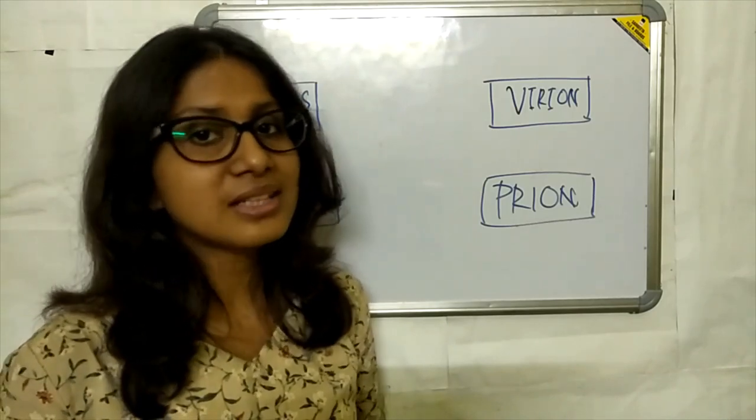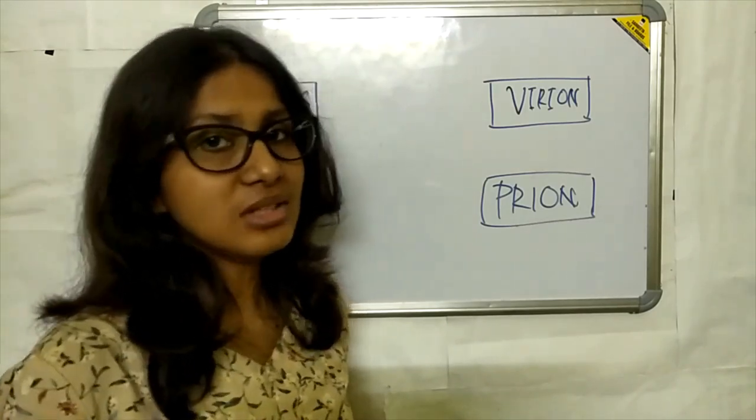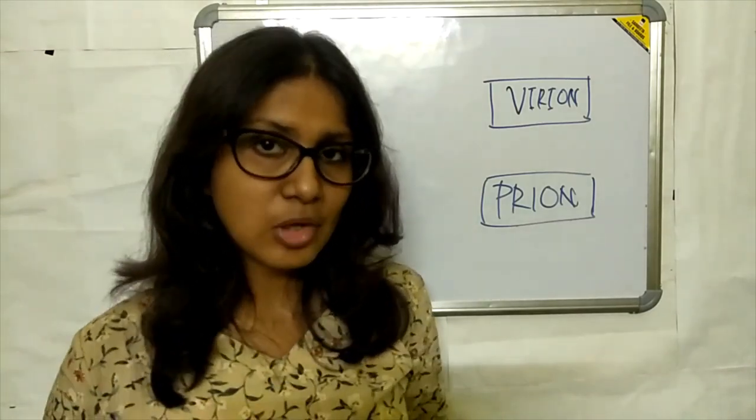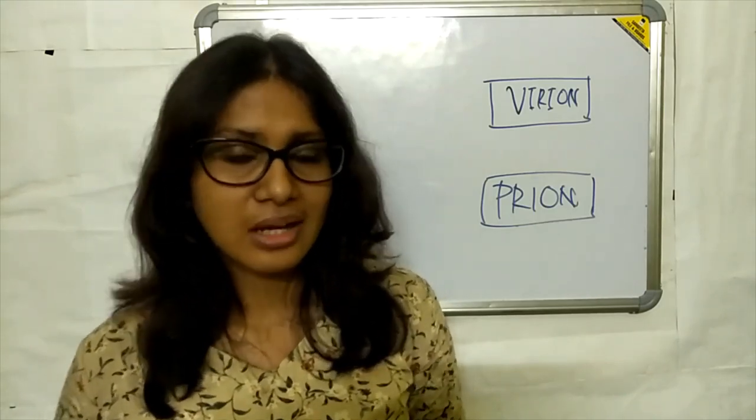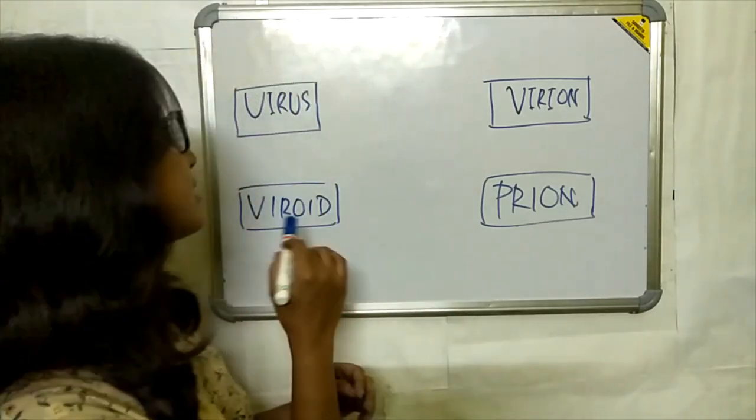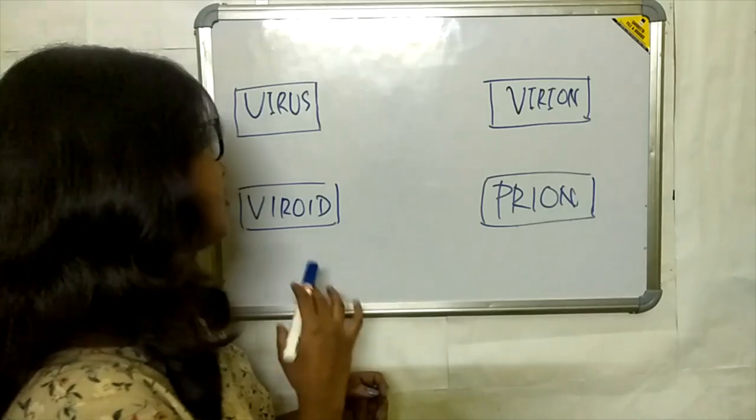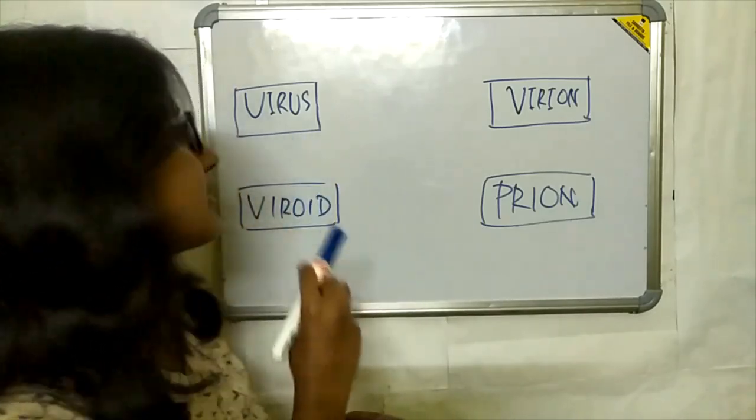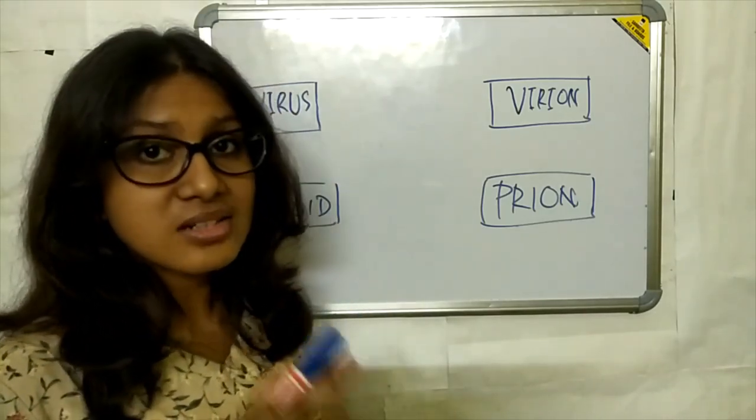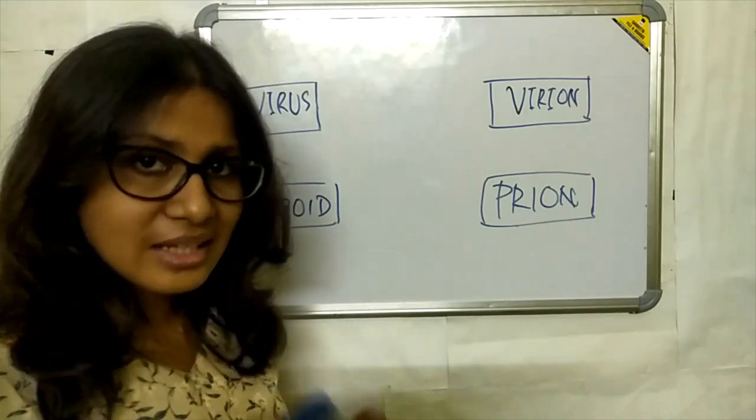Hi everyone, welcome back to Biology Circuit. In today's session, I will discuss some terminology related to viruses: the difference between virus, virion, viroid, and prion. First, come to the virus. Virus is an intracellular parasite. They cannot reproduce on their own.